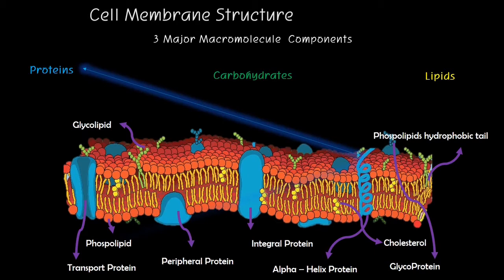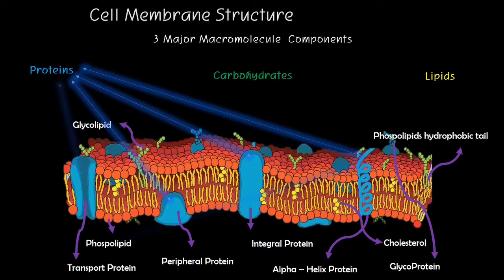Proteins consist of alpha helix proteins, the integral proteins, the peripheral proteins, and the transport proteins.